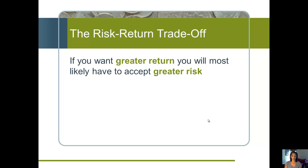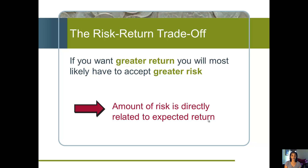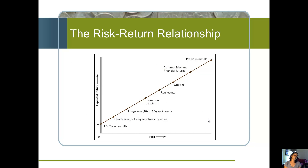We've talked about risk and return, so putting them together gives us the risk-return trade-off. That means if you want to earn a greater return, you have to take on more risk — the more risk, the more return. The amount of risk you take on is directly related to how much return you can expect. On this graph with risk on one axis and return on the other, Treasury bills are plotted at zero as they're considered risk-free, and as risk increases going out to precious metals, the potential return increases as well.